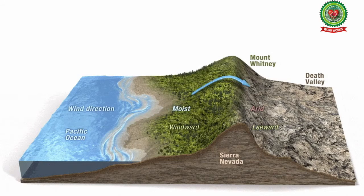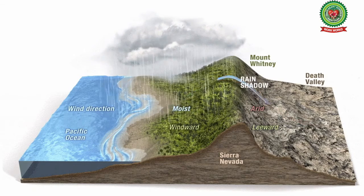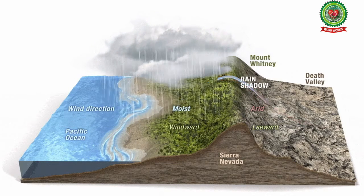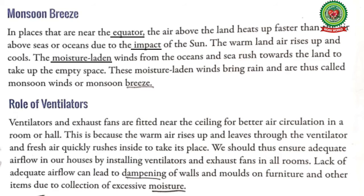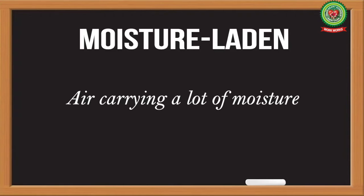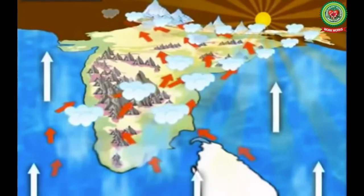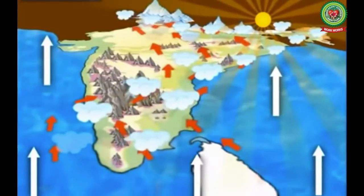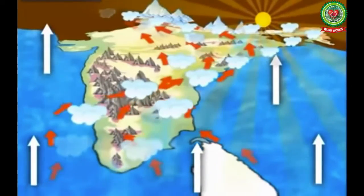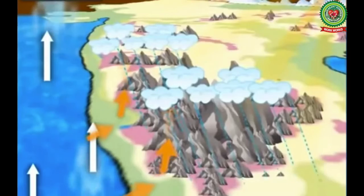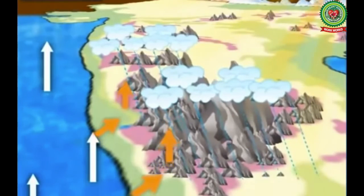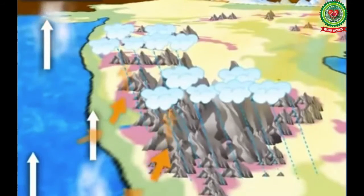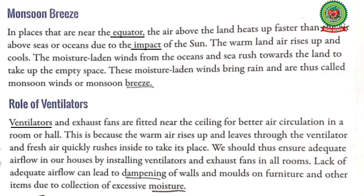The moisture-laden winds from the ocean and sea move towards the land to take up the empty space. Moisture-laden means air carrying a lot of moisture. When these moisture-laden winds move from the ocean towards the land, they bring rain, and thus are called monsoon winds or monsoon breeze.